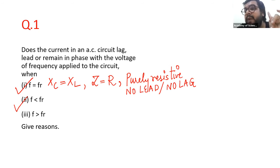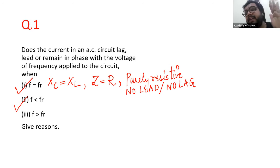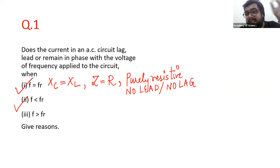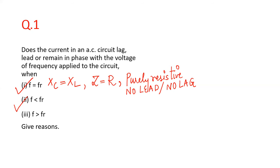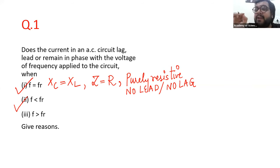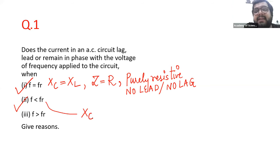When the applied frequency is smaller than the resonant frequency — do you remember the graph from the last class? When the applied frequency is smaller than the resonant frequency, what will be the relationship between XC and XL? XC will be greater than XL. When the resonant frequency is smaller than the applied frequency, we know XC is bigger than XL.